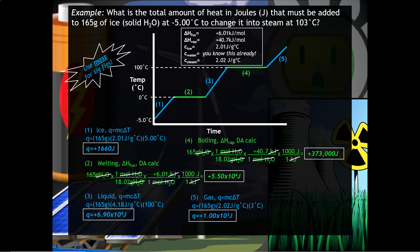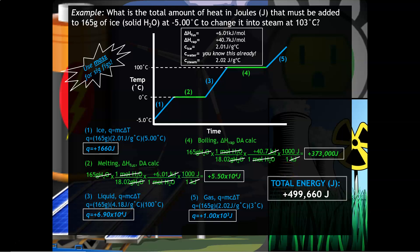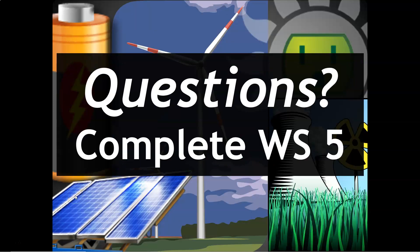You're not done yet — the question asks for the total amount of heat energy in joules. So you must add all five individual energy changes together to get the total energy change for this process. That's five calculations for one problem — a lot of work. More often than not, teachers may only ask you to calculate a section of the curve. Either way, I hope this video helped. Practice is really important, so make sure you do your homework. Thank you so much for watching.